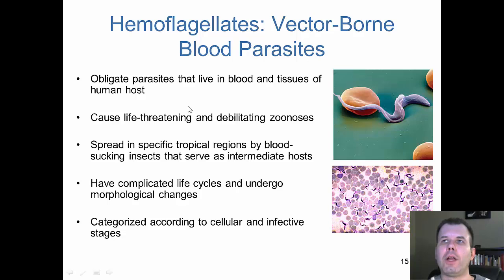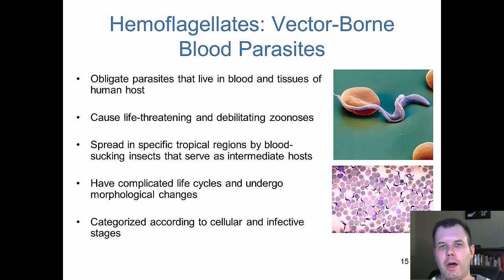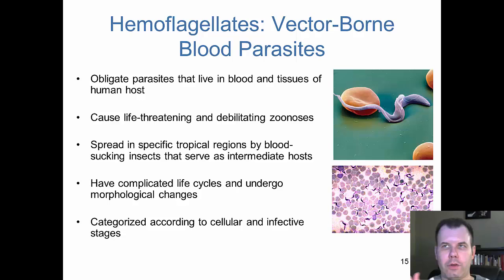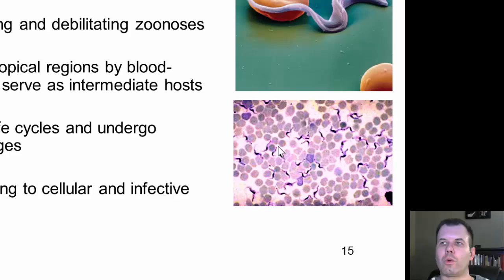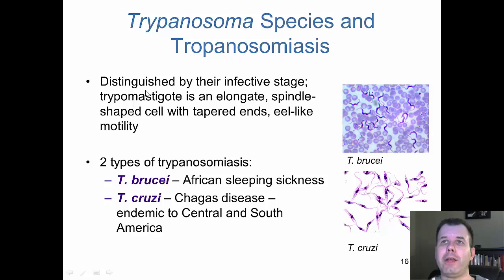The hemoflagellates are obligate parasites that live in blood and tissues of the human host, causing life-threatening zoonoses. They're spread in tropical regions by blood-sucking insects that serve as intermediate hosts. Two main diseases: African sleeping sickness, spread by the tsetse fly, and Chagas disease in Central and South America, spread by the kissing bug. They have complicated life cycles with morphological changes, and you can see the parasites as little worm-like shapes in blood smears.